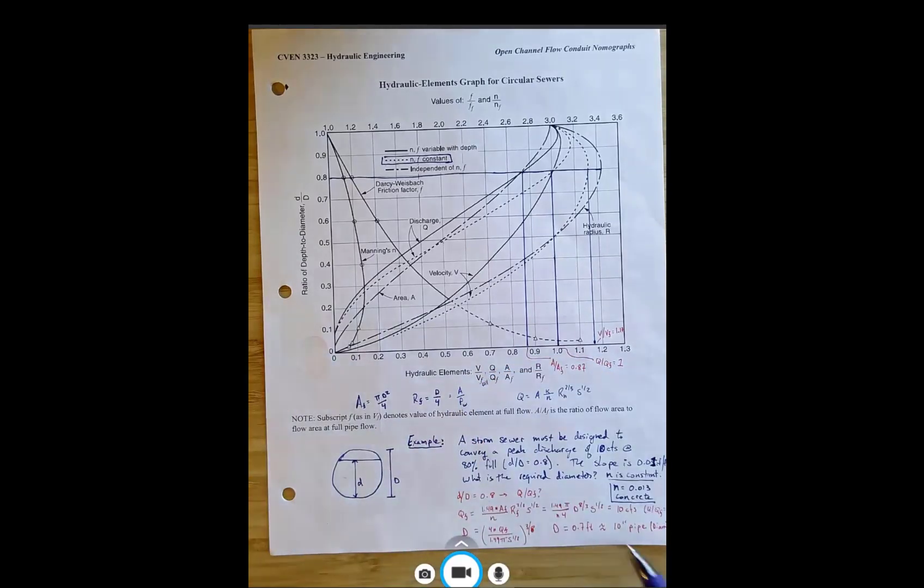So if you plug all those in here, we end up with this thing. So pi over 4 d to the 8 thirds, that's when you put the hydraulic radius in here and the diameter in here. So this is what the equation looks like in terms of diameter, and that's just equal to our design flow of 10 CFS. So now we can solve for D.